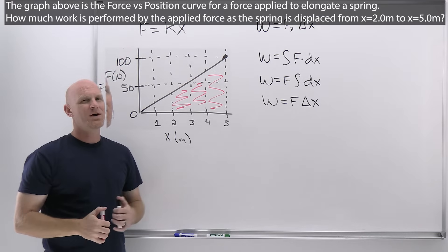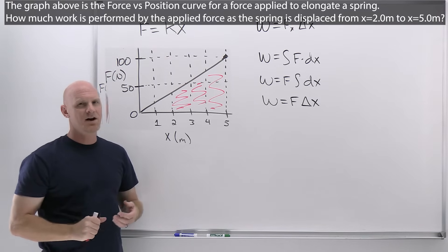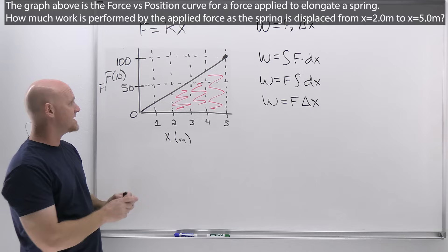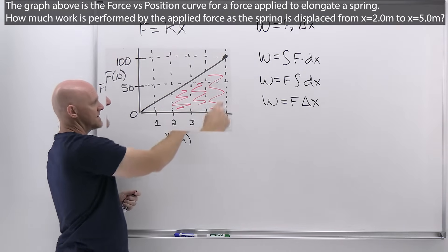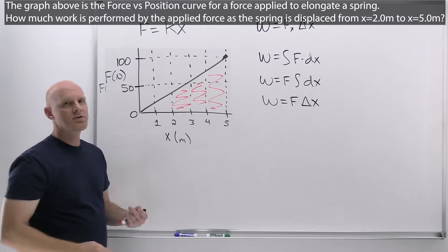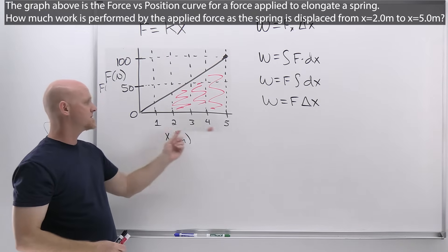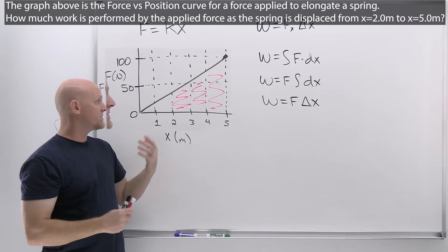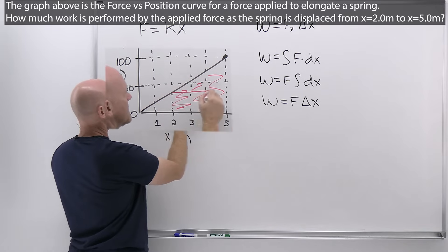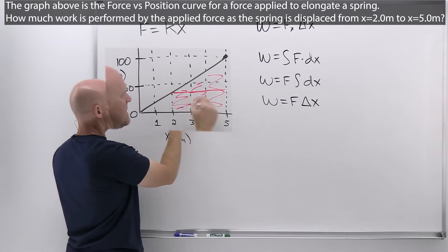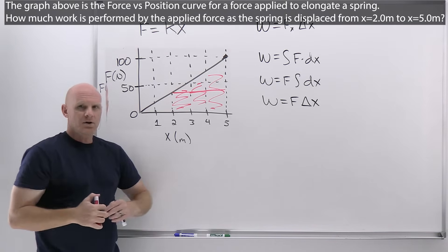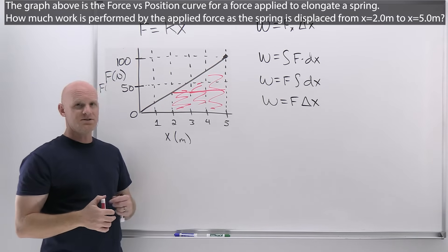That area is not the easiest thing to find — it's not a perfect rectangle or a triangle by itself. However, we can do a couple of different things. I can see that I do have a triangle here, so I could take the big triangle minus the little one, which would give the area highlighted from 2 to 5 meters. We could also cut this up into a rectangle here and a triangle here. Any kind of normal route using a little bit of geometry will work.